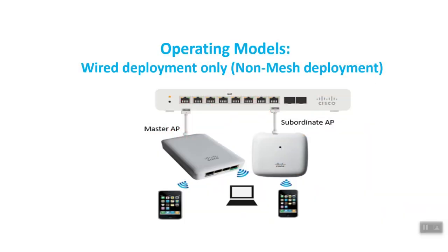In the Wired Deployment model, all the access points in the Cisco Business Wireless AP network have wired uplink only. All the APs are master capable, yet one among them will serve as the master AP. The other subordinate APs in the network will join the master. In this scenario, the APs will act in AP-only mode.